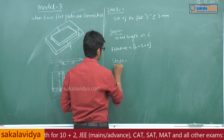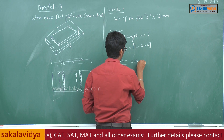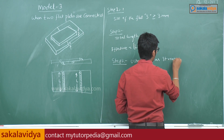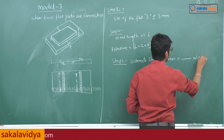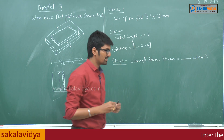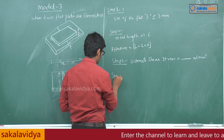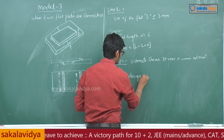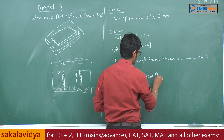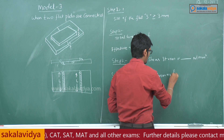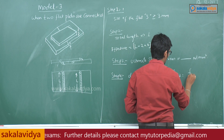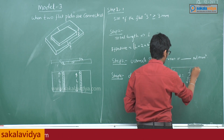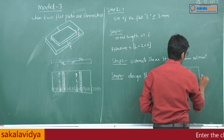Step 3: ultimate shear stress. It will be given in the question itself, with units of Newton per mm squared. Step 4: design shear stress. The design shear stress F_wd is equal to ultimate shear stress divided by root 3 into the partial safety factor. Units are Newton per mm squared.